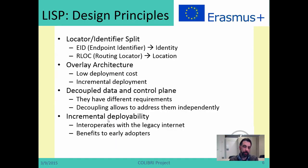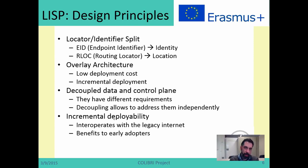One of the most important things to understand about LISP is that it splits IP addresses into two sets. One set is called EIDs — endpoint identifiers — and the other set is called RLOCs — routing locators. In both cases they are IP addresses, either IPv4 or IPv6, but an IP address will be either an EID or an RLOC; it cannot be both at the same time.